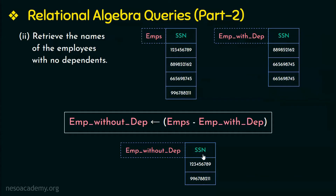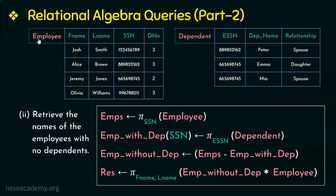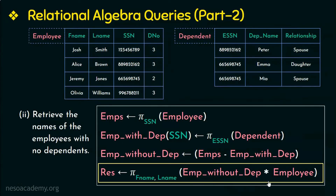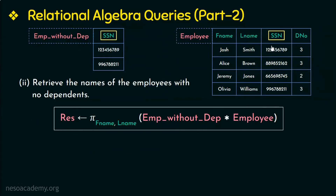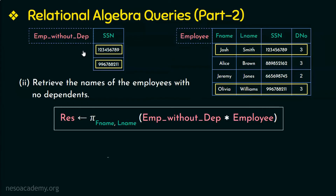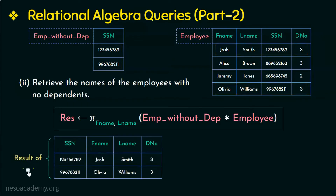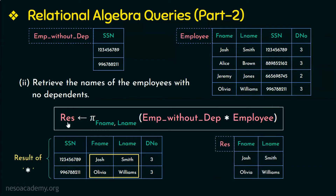So now we have the SSN of the employees with no dependents. Next we need to retrieve their names as asked in the question, which we do by joining this relation with the employee relation — the last step in the query. The join attribute is SSN. There are 2 tuples from the employee relation that match with the SSN from this relation, so that combination of tuples is the result of the natural join. We project only the first name and last name, and therefore these are the 2 employees with no dependents.